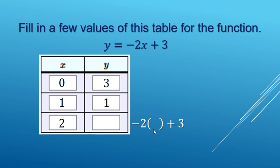And for the last row, negative 2 times 2 plus 3. That's going to be a negative 4 plus 3 makes negative 1.